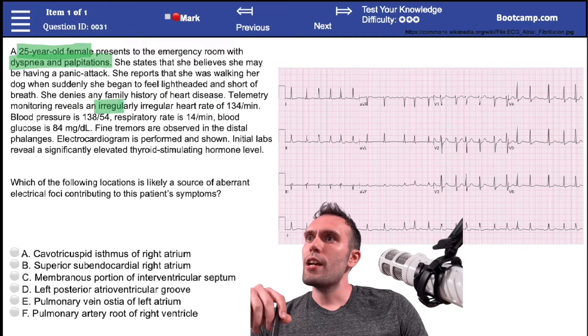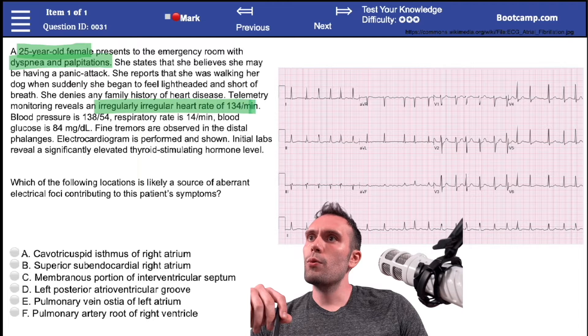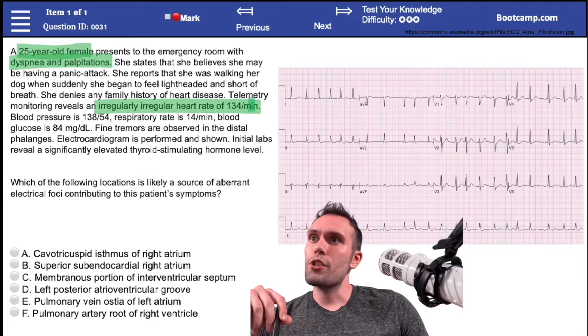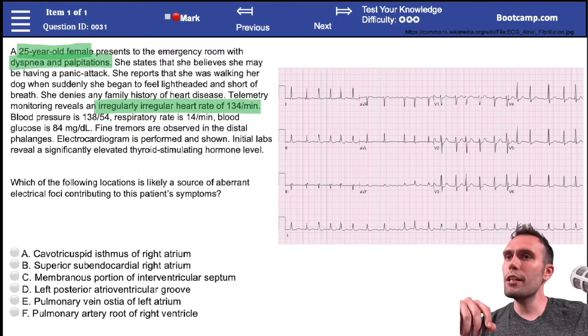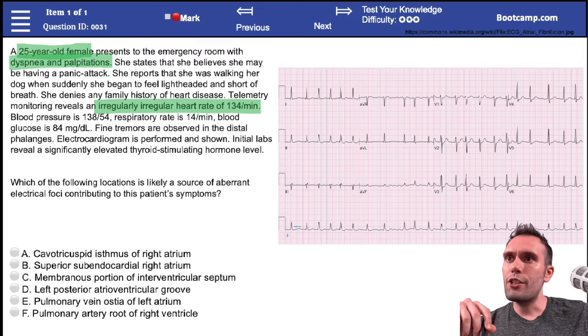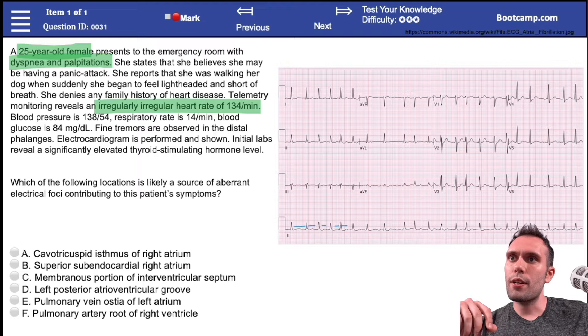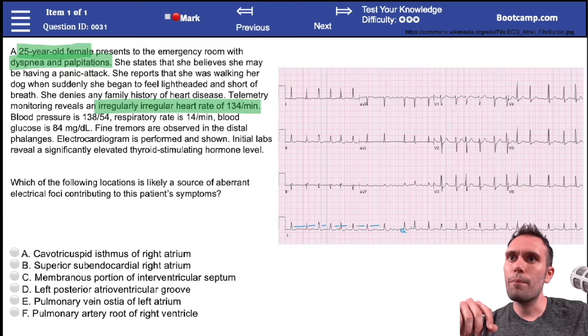She has an irregularly irregular heart rate of 134, which is pretty significantly elevated. If we look here we can see in lead two, look at this irregular spacing between the QRS complexes. This is very classic for atrial fibrillation. We don't really see any P waves here either, so no discernible P waves in most of these leads.